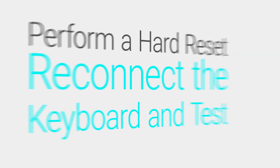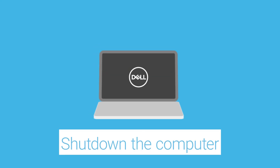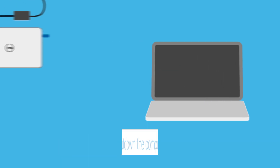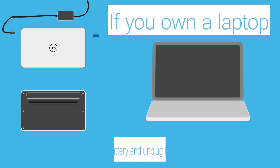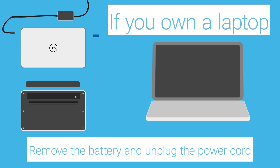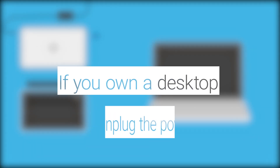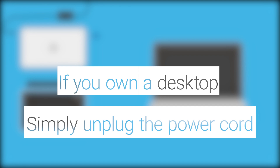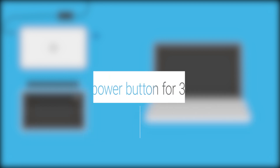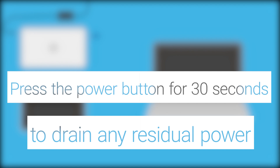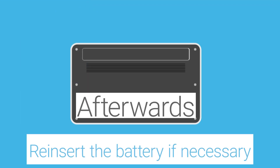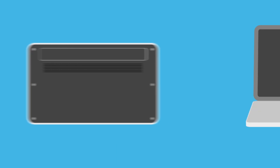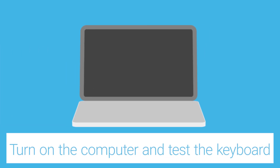To perform a hard reset, shut down the computer and disconnect any external peripherals. If you own a laptop, remove the battery and unplug the power cord. If you own a desktop, simply unplug the power cord. Press the power button for 30 seconds to drain any residual power. Afterwards, reinsert the battery if necessary. Lastly, turn on the computer and test the keyboard.